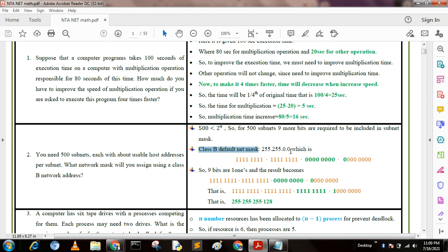Two bytes for net ID and two bytes for host ID. Default net mask is 255.255.0.0, whose binary representation is all ones in first two bytes. Nine bits are ones, and we replace zeros with ones to get the result: 255.255.255.128. This is the answer.